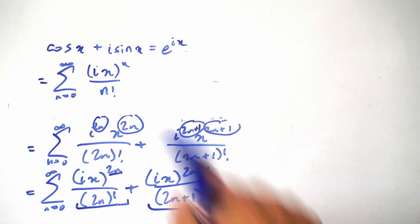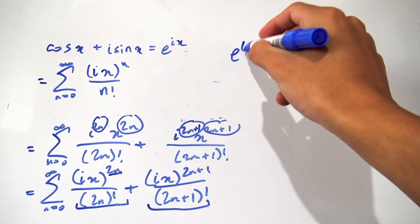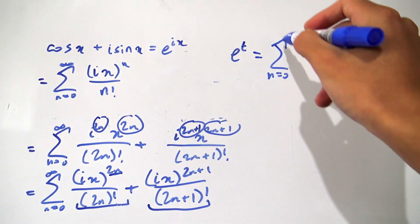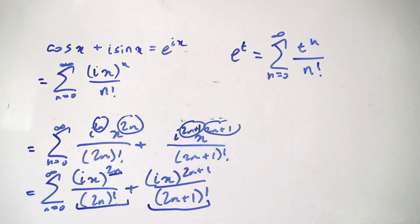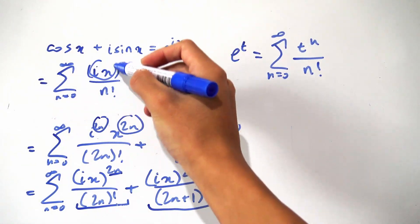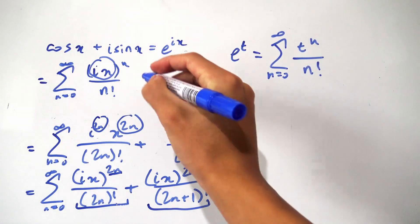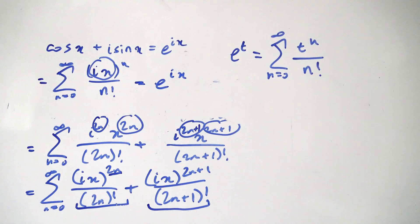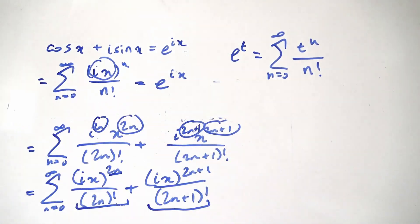This looks quite familiar. The Taylor series expansion for e to the t is exactly the sum from n equals 0 to infinity of t to the n over n factorial. Here our argument is ix and everything else matches exactly, so we get e to the ix. And that's how you derive Euler's formula using Taylor series expansions.